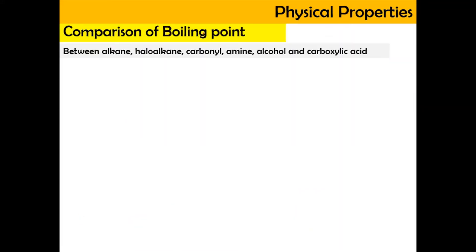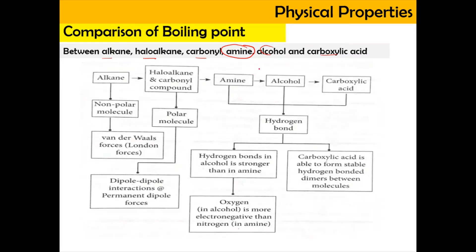Next, we compare the boiling point of alkane, haloalkane, carbonyl, alcohol, and carboxylic acid with amine using a flowchart. Alkane has the lowest boiling point because it consists only of carbon and hydrogen atoms, making it a non-polar molecule. As a non-polar molecule, it only contains van der Waals forces, also known as London dispersion forces.